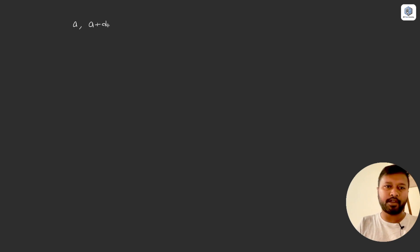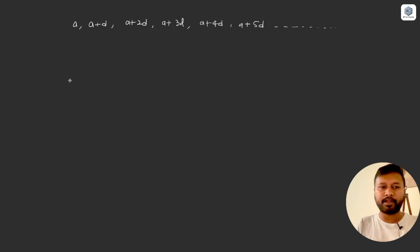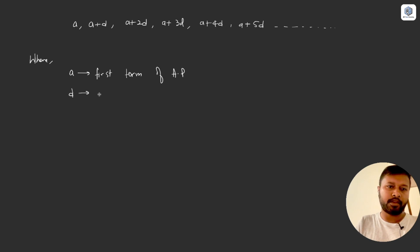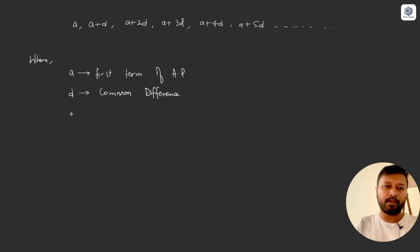Now let's look at the general form of arithmetic progression. A general AP is written as: a, a+d, a+2d, a+3d, a+4d, a+5d, and so on. Here, 'a' is the first term of the AP, 'd' is the common difference, and 'n' is the number of the term we are looking for.